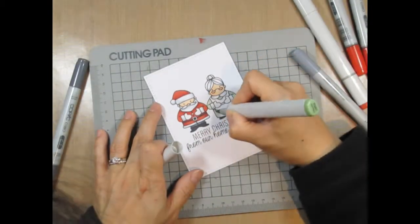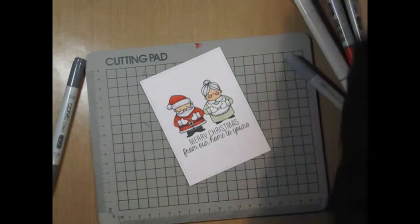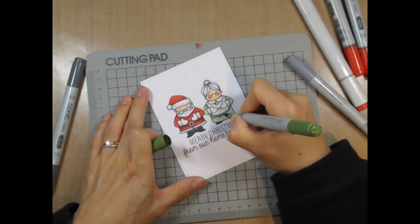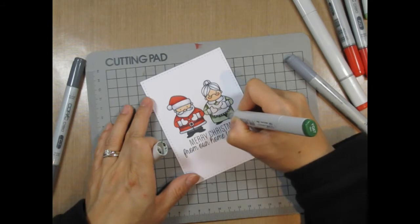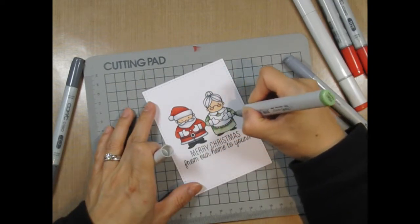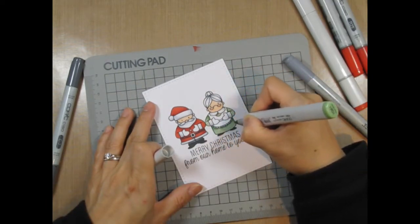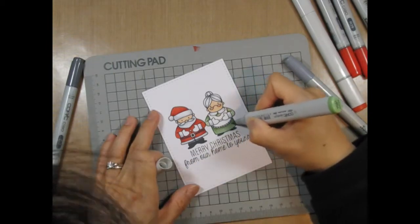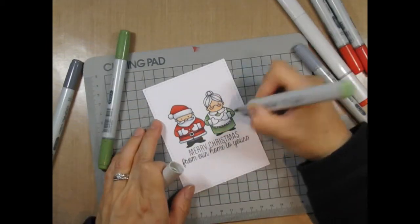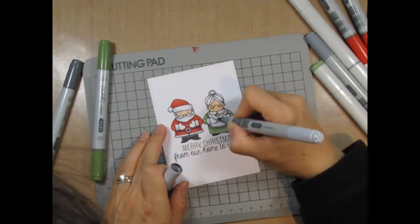So I was thinking a bit there about what colors to use on Mrs. Claus's dress and her apron. I decided her dress would be green to contrast with Santa's outfit, and I'm going to keep her apron white, but I'm going to use some gray to shade it in.